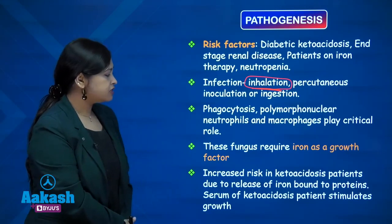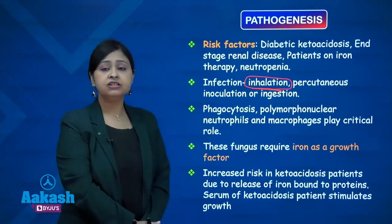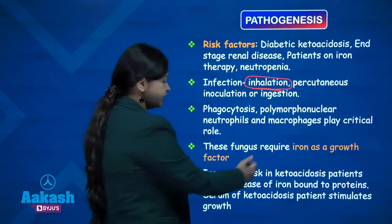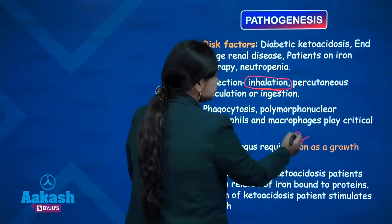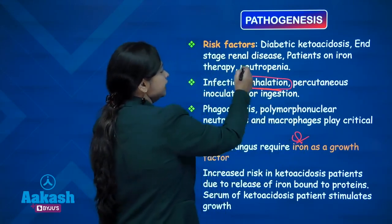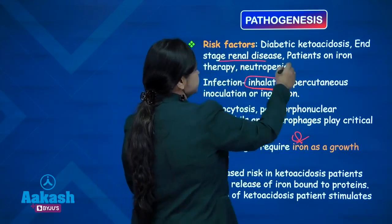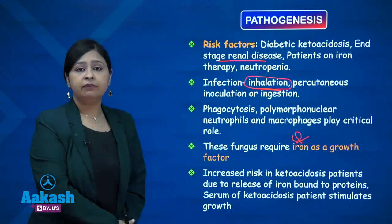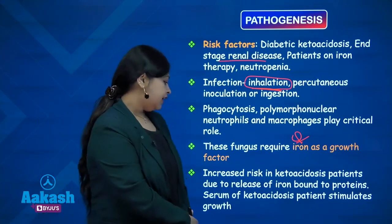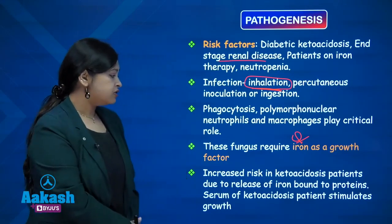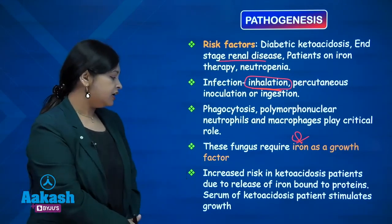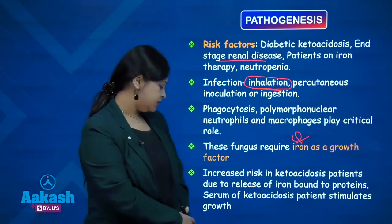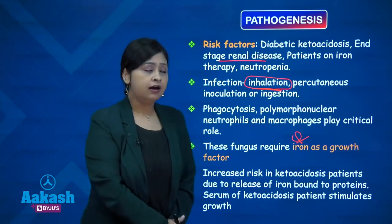Polymorphonuclear neutrophils and macrophages play a critical role in pathogenesis. These fungi require iron as a growth factor, which explains why end-stage renal disease patients on dialysis and patients on iron therapy are prone to this infection. The increased risk in ketoacidosis is due to release of iron-bound proteins and because serum from ketoacidotic patients stimulates the growth of mucor.